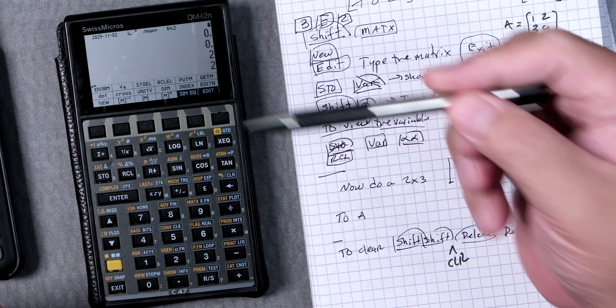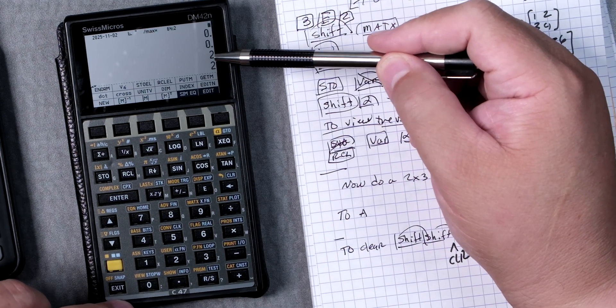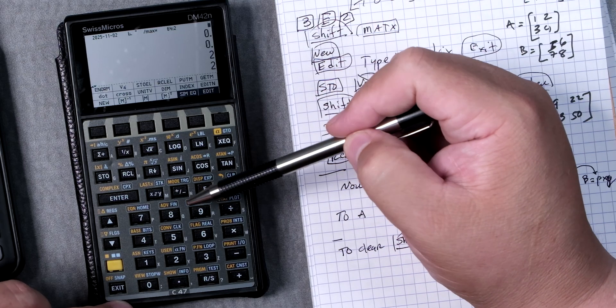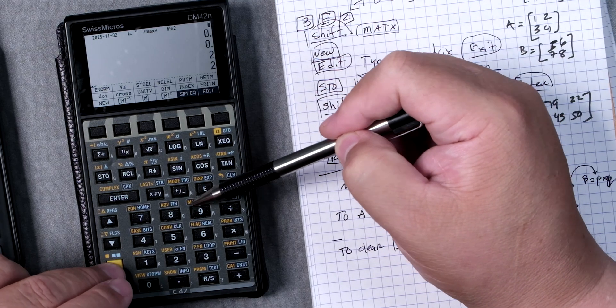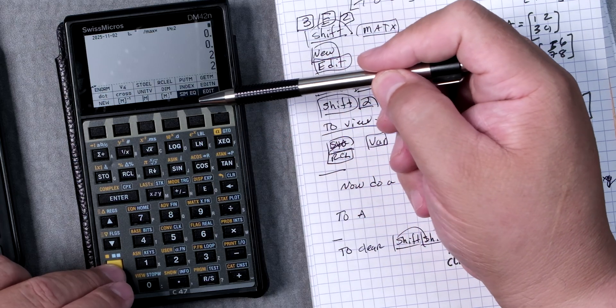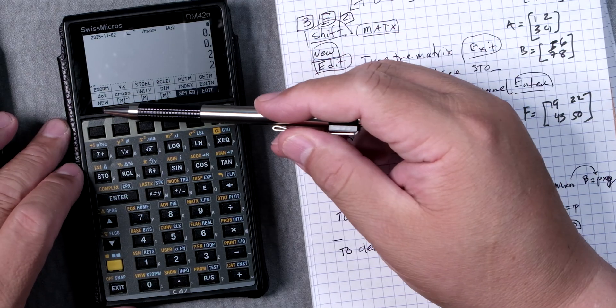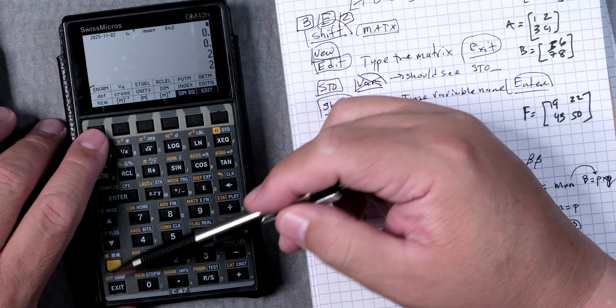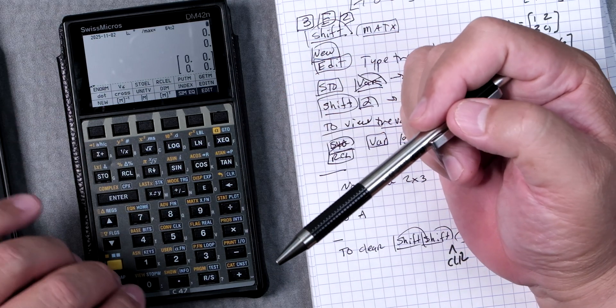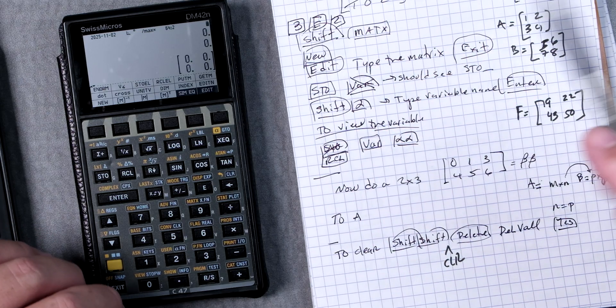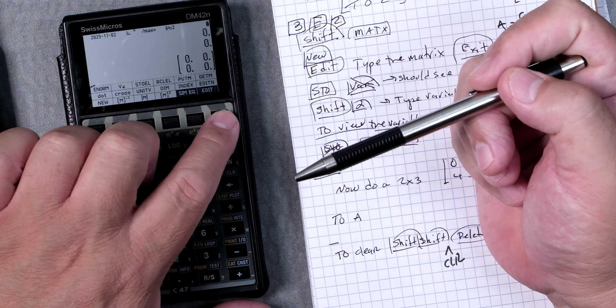Now I still have the two and the two on the different stacks. I press the matrix, right shift matrix, and I have these particular sub menus. What I want to do is press new. I don't have to do shift or anything, just press new. Now it's giving me a two by two matrix and I need to edit which is over here. I'm going to press edit.